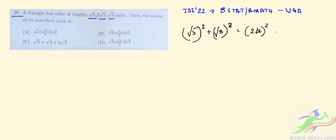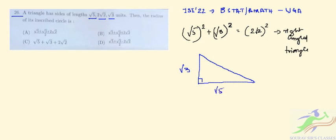Hence it is a right angle triangle. Hypotenuse square is equal to the base square and the perpendicular square. So it will look like this is the right angle triangle. So we have root 3 over here, root 5, and 2 root 2.